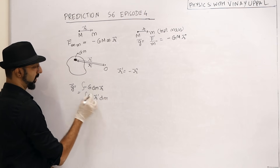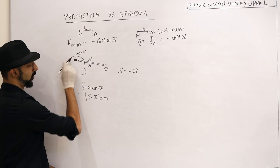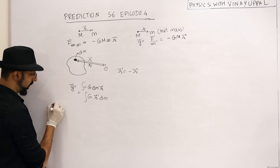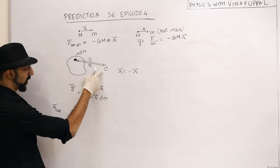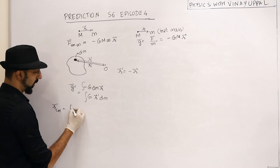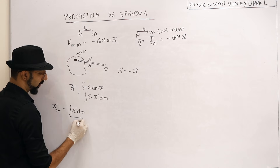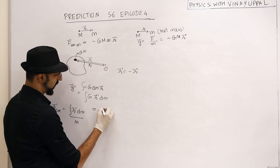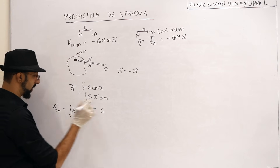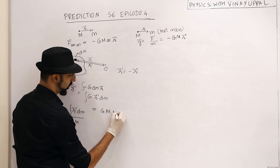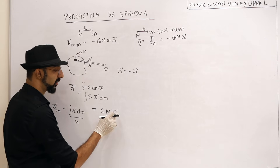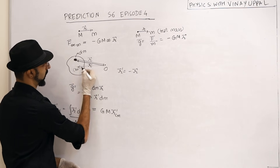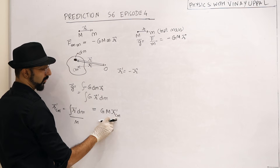Notice something familiar: the integral of r'·dm is something that appears in the centre of mass expression. The position vector of the centre of mass is: integral of r'·dm divided by the total mass. So I can replace integral r'·dm with M·r_cm — where r_cm is the position vector of the centre of mass with respect to the origin O, and O is the point where we want to calculate the field.